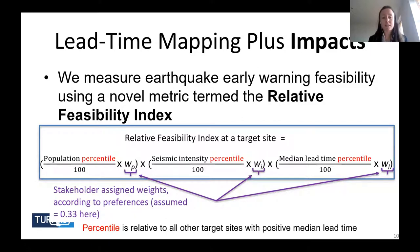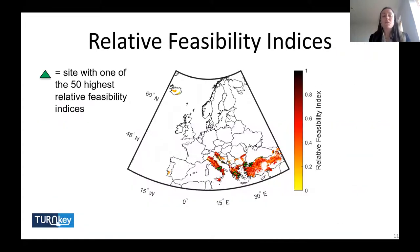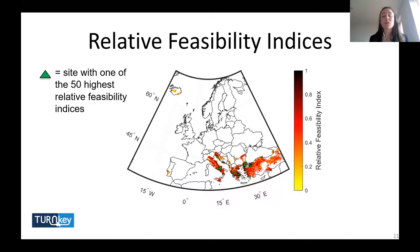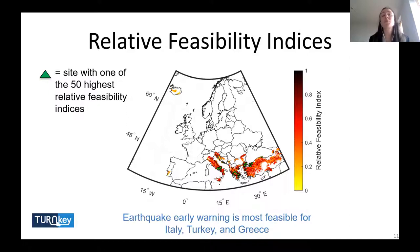In the application shown, all components of the index are equally weighted at 0.33. Applying this index across Europe — where triangles denote sites with the highest relative feasibility indices — we find that Italy, Turkey, and Greece are the countries with the highest relative feasibility across Europe, all of which are also associated with the highest seismic hazard in Europe.